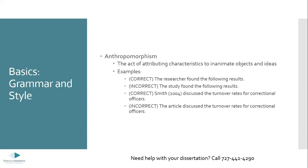Anthropomorphism is common and accepted in fiction, but especially in academic writing we want to be clear and give credit to the people who are acting, the people who have written. We want to avoid putting emphasis on the product and instead emphasize the performer — the author, the speaker, the participant, the researcher. That's why anthropomorphism is one of those things we really stress avoiding in APA.